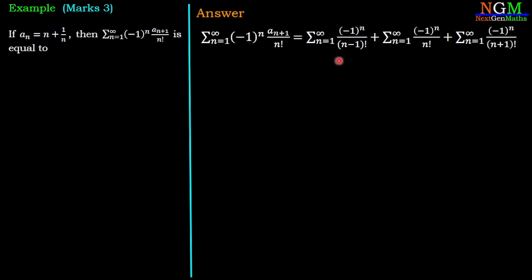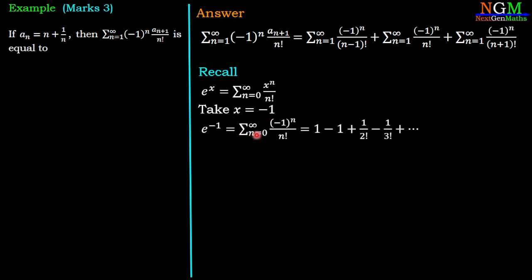To find the value of these three sums, we recall the series for e^x: e^x = Σ (n=0 to ∞) x^n/n!. If we take x = -1, then e^{-1} = Σ (n=0 to ∞) (-1)^n/n!. Here the first term at n=0 is (-1)^0/0! = 1, then at n=1 we get -1, then +1/2!, then -1/3!, and so on.